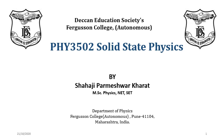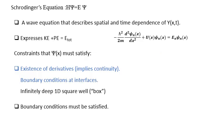Hello students, today we will continue with the one-dimensional potential. We have seen Schrödinger's equation is H psi equal to E psi, where the wave function describes the particle. Psi of x contains the kinetic energy part plus potential energy part, which gives the total energy. So H contains kinetic energy plus potential energy.